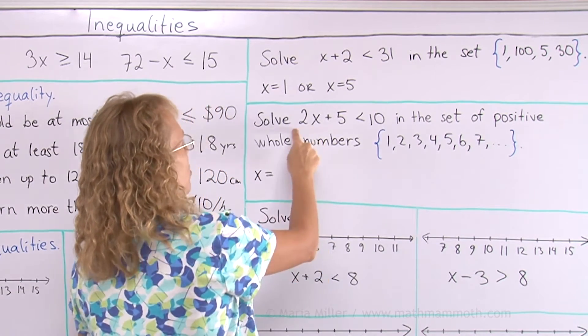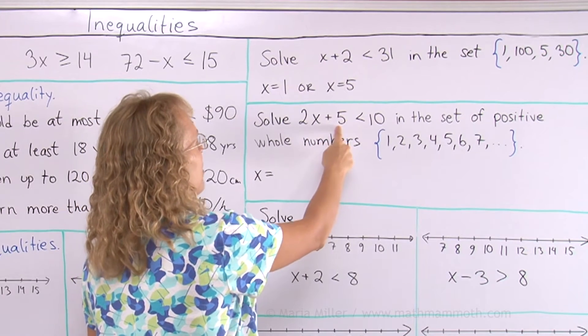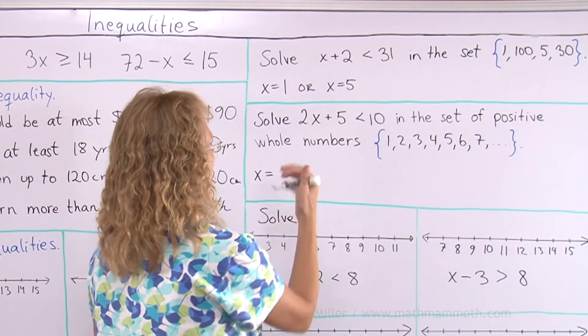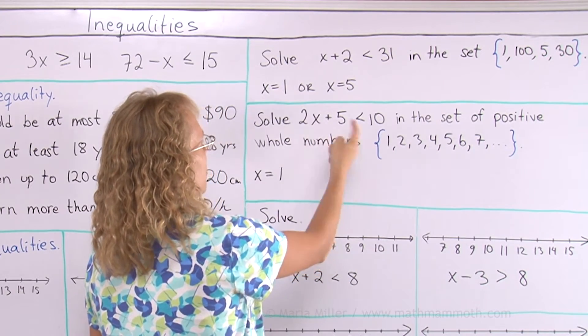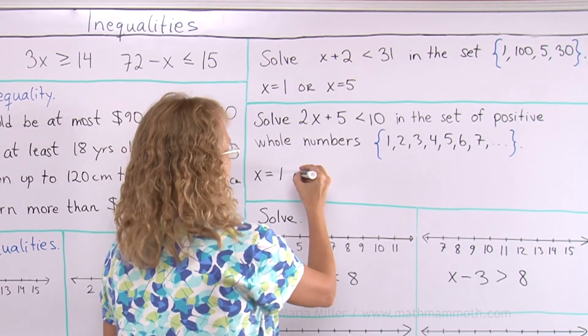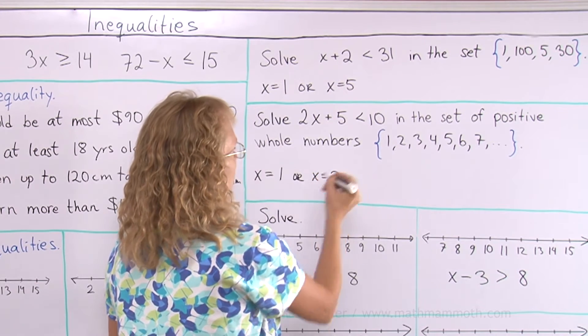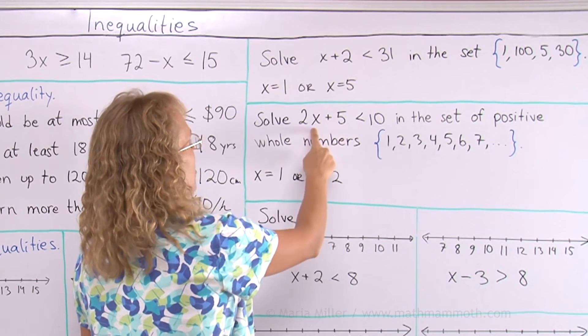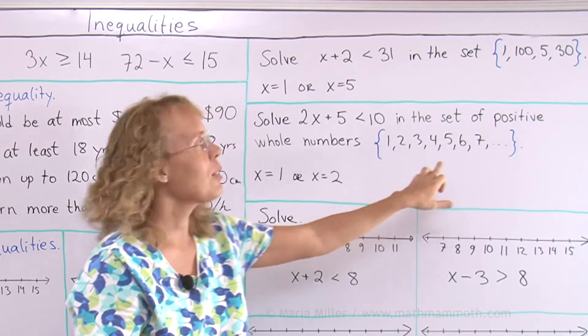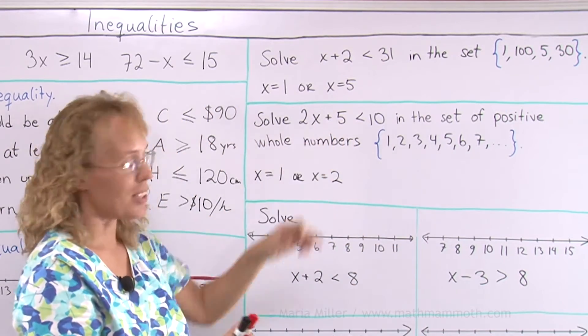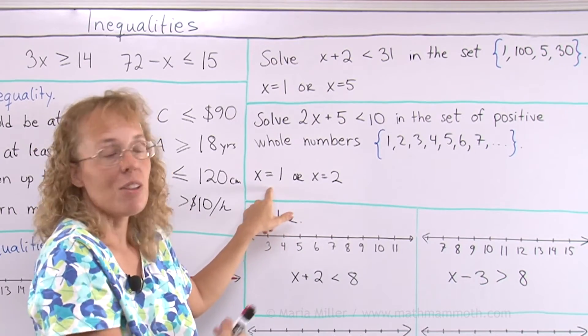x could be 1 for sure. 2 times 1 plus 5 is 7. x equals 1 works. How about 2? 2 times 2 plus 5 is 9. That works. How about 3? 2 times 3, 6 plus 5 equals 11. That won't work. And any greater number than that won't work either. I hope you can see that. That's all there is for the solution.